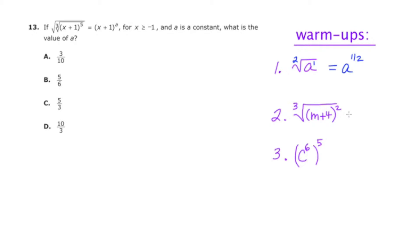Now in number 2, the same sort of thing can be applied even if your radicand is not a single thing but it is a chunk. So instead of saying a to the one-half, now I'm going to say m plus 4 to the two-thirds.